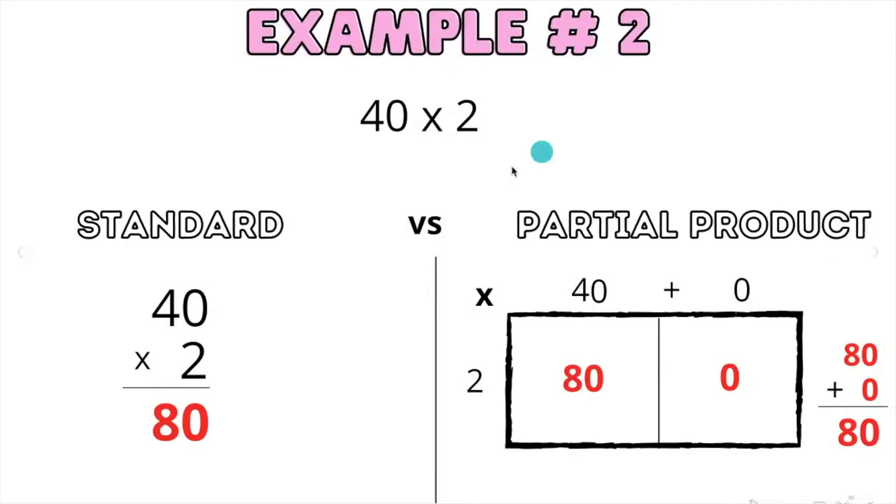Example number 2. 40 times 2. We'll line up our numbers and multiply. 0 times 2 is 0, so no need to carry anything. 2 times 4 is 8, so the answer is 80.